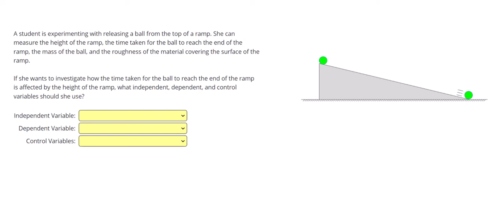A student is experimenting with releasing a ball from the top of a ramp. She can measure the height of the ramp, so that's one variable, the time taken for the ball to reach the end of the ramp, the mass of the ball, the roughness of the material covering the surface.